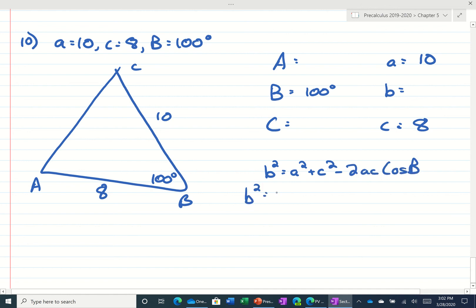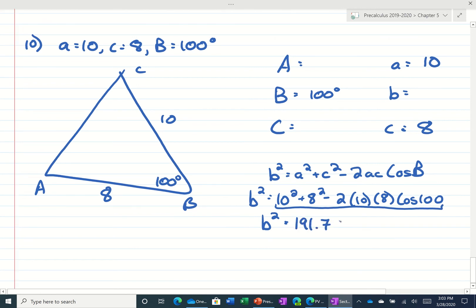So let's plug in our numbers. Let's see what this is here. So 10 squared plus 8 squared minus 2 to 10, 8, and then the cosine of 100. I'm going to type it in exactly like I wrote it here. And that's 191.78 whatever. If I take the square root of both sides. And that comes out to 13.8.